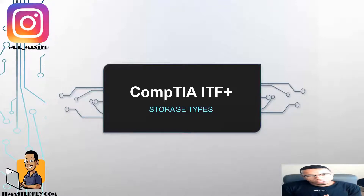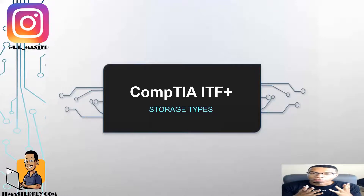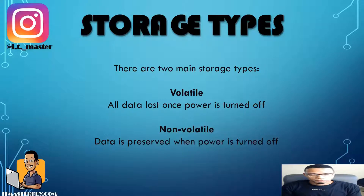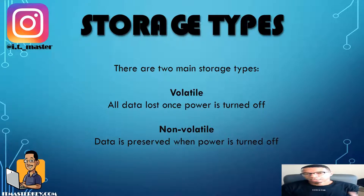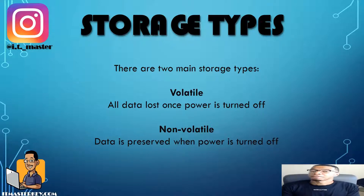In this episode of our video series and course, we're going to talk about storage types. With different types of storage, you have two types mostly: they're either volatile or non-volatile. Volatile means that if you turn the power off, everything that was stored on a storage device is erased. If it's non-volatile, everything stored on that device will still be there the next time you turn on the power.